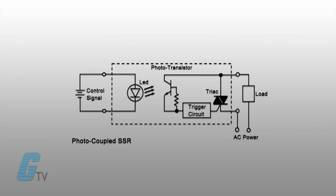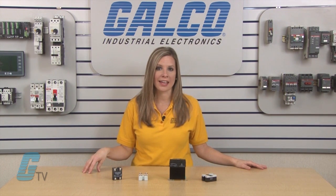A typical solid state relay has an optical semiconductor, such as photocouplers, that isolates the input signal by converting the electrical signal into an optical signal. A circuit is activated when a voltage higher than the relay's specified pickup voltage is applied, and is deactivated when the voltage is less than the minimum dropout voltage.